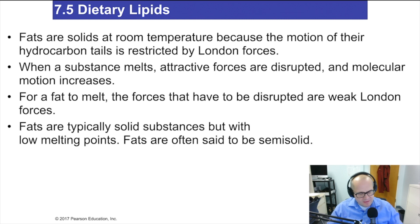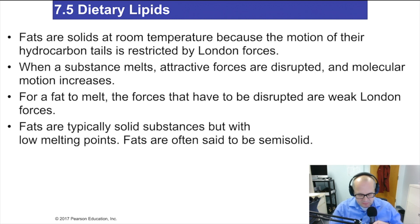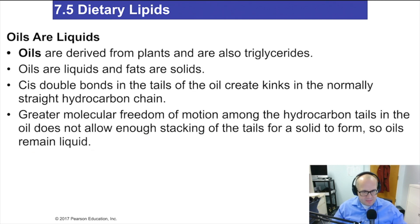When you melt fat, their attractive forces are disrupted and their molecular motion must increase. That's called rendering — when you render fat, you basically make the molecules move a little faster. For fat to melt, the weak London forces have to be disrupted. Fats are typically solids but with low melting points — fats are often called semi-solids, which just means they're soft solids. Oils come from plants typically, and they are also triglycerides — they're just unsaturated.